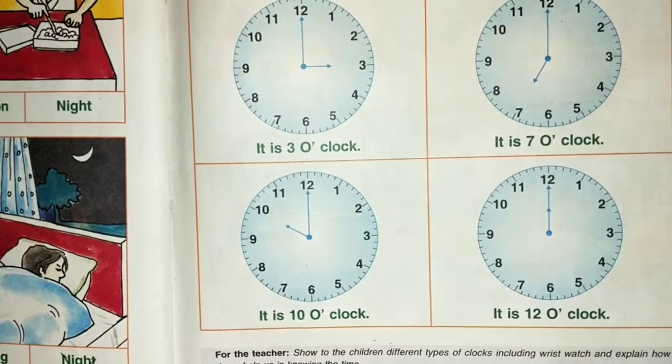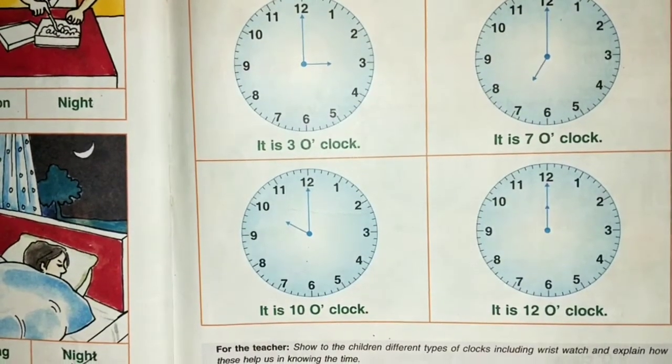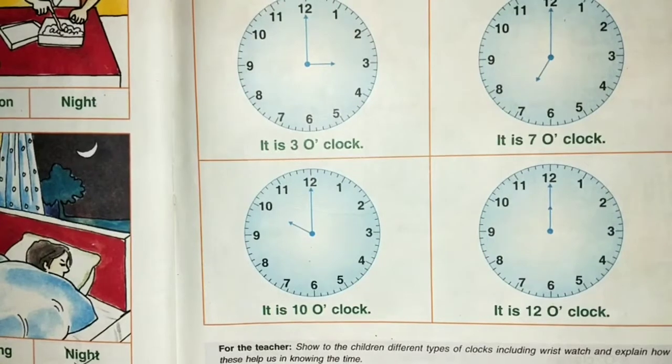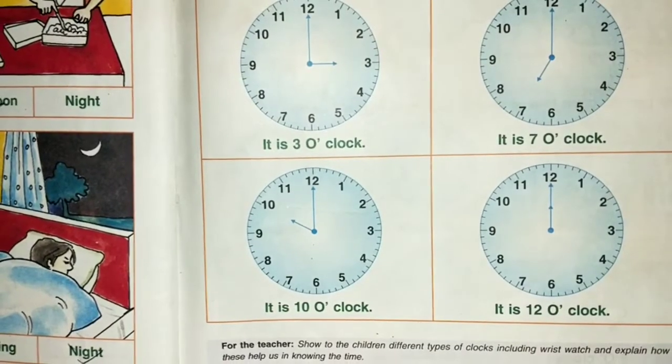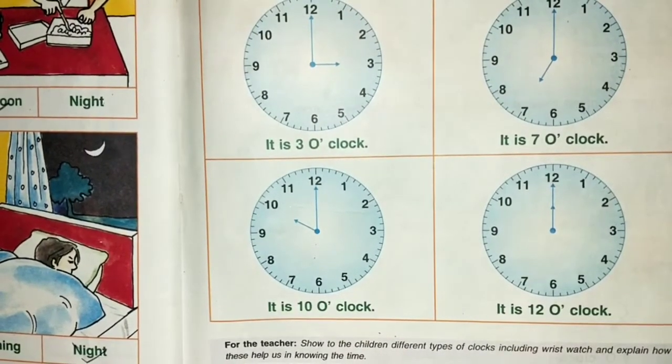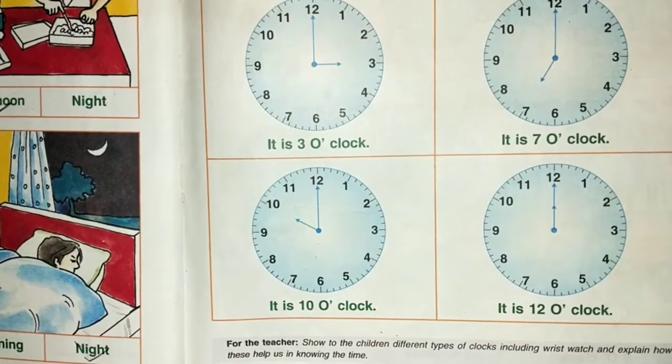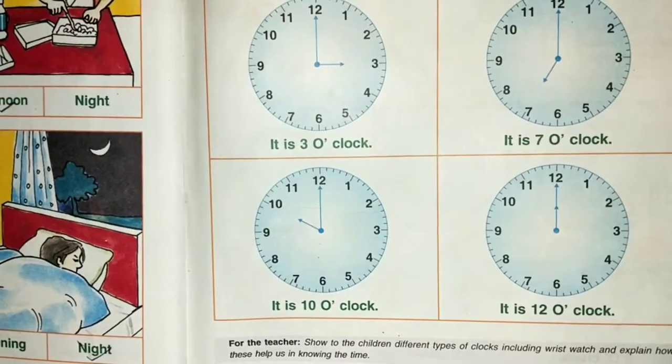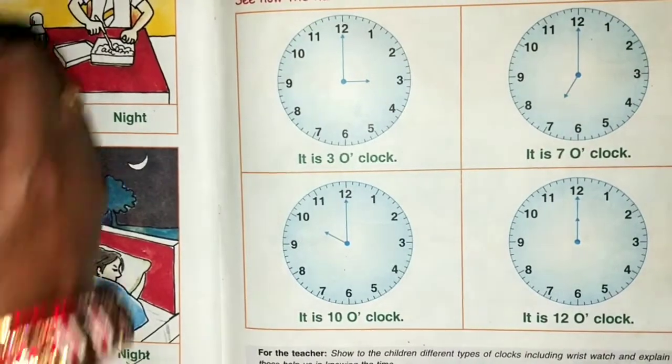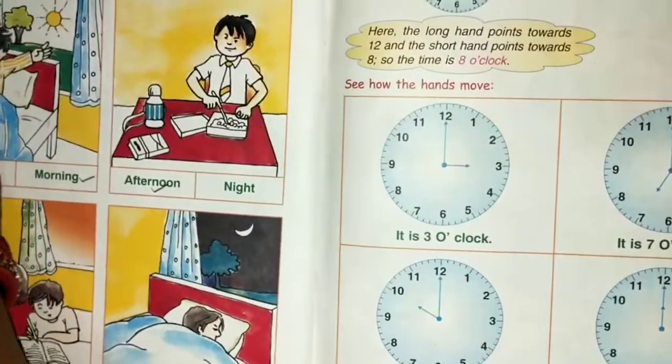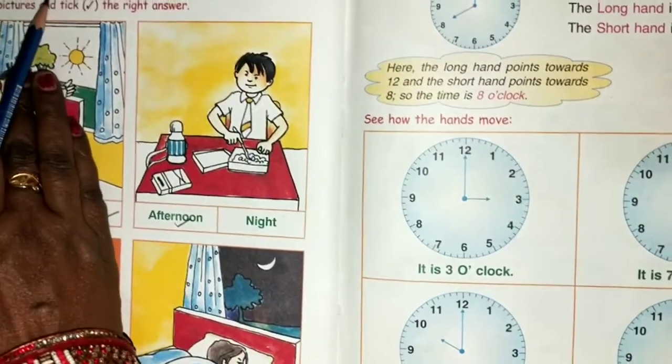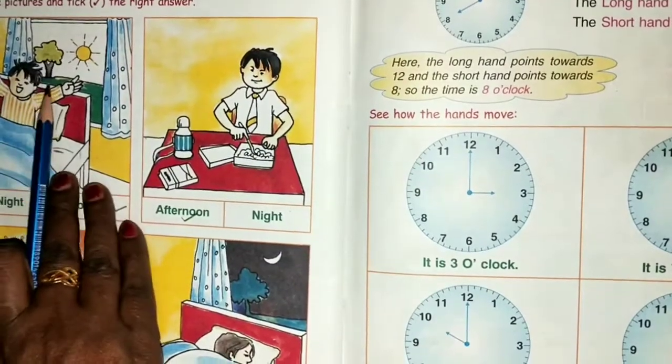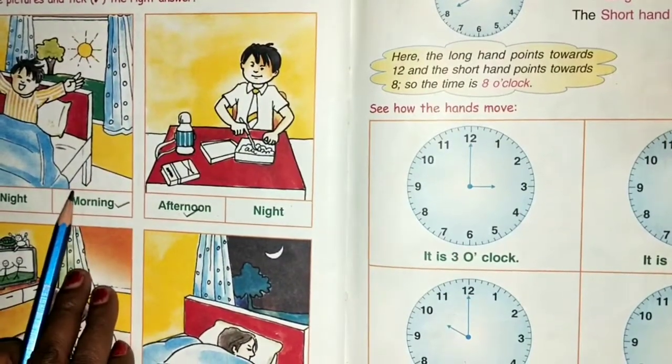Children, your page 101 ends here. We will study page 102 in the next class. What is your homework? Your homework is page 100, time, what is the time. You have to do this. As I explained how to tick, you need to understand and tick.